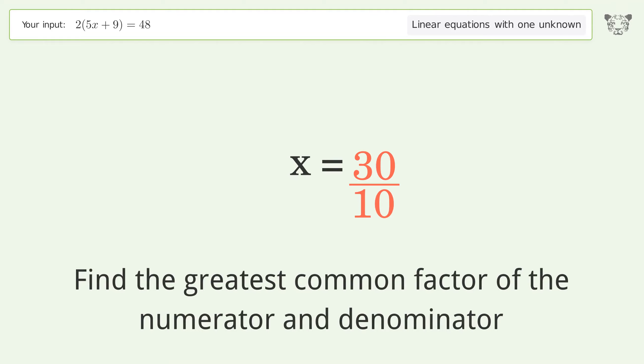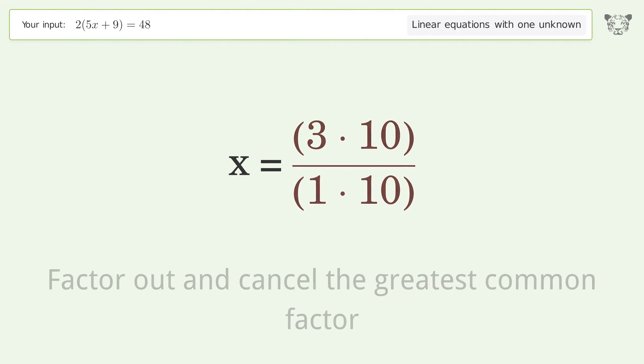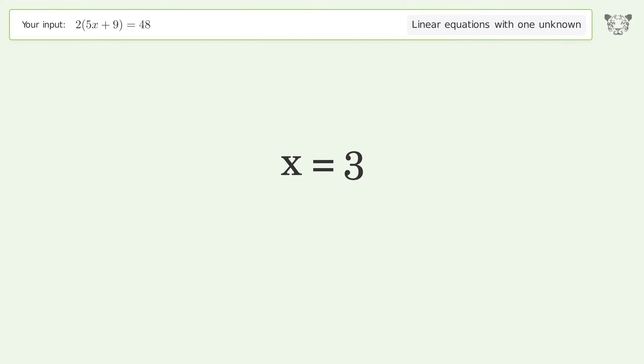Find the greatest common factor of the numerator and denominator. Factor out and cancel the greatest common factor. The final result is x equals 3.